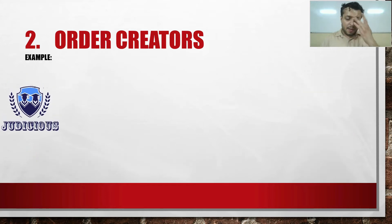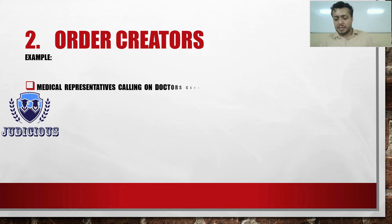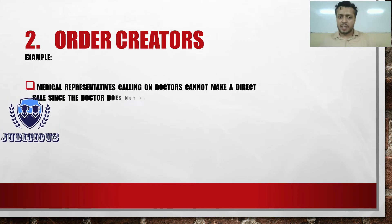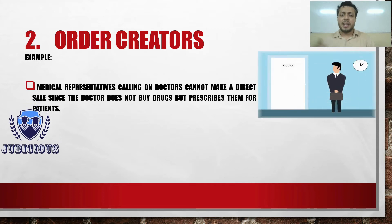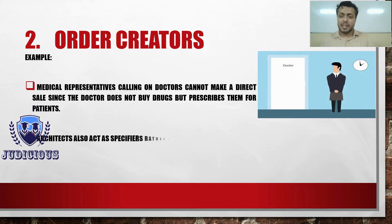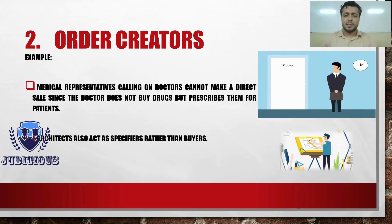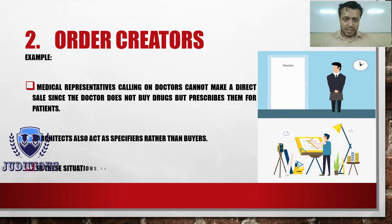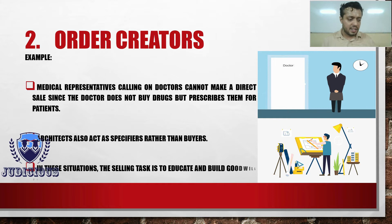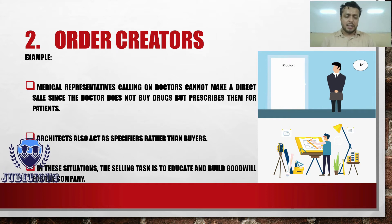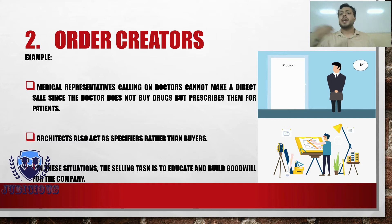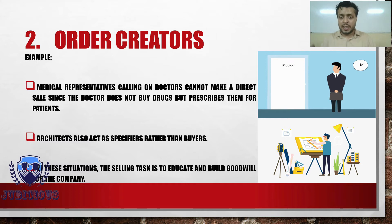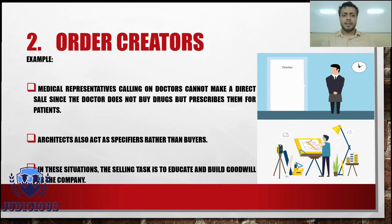For example, if we talk about medical representatives — the MRs — they visit doctors. They don't sell medicines directly to the doctor; rather they persuade the doctor to prescribe their medicine to patients, so that the patient purchases it. A similar role exists in the case of architects as well. So essentially, their selling task is more about educating and creating goodwill for their company, rather than actually going out and selling goods to collect money.